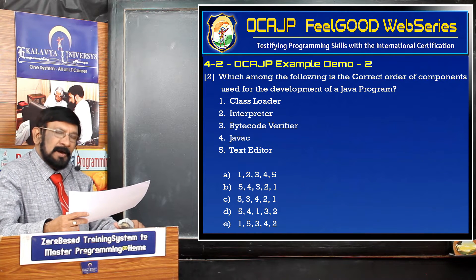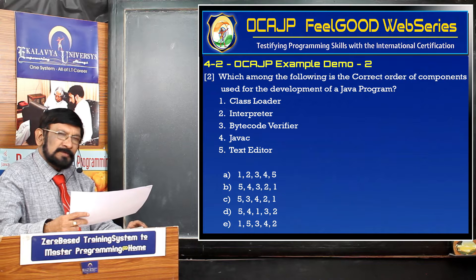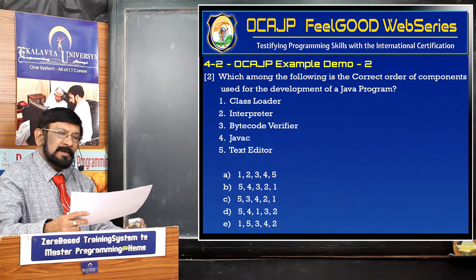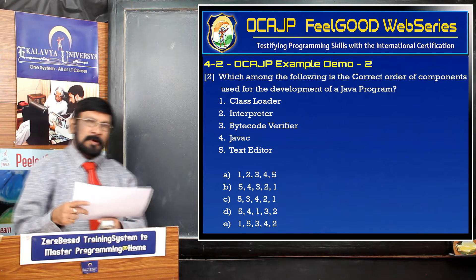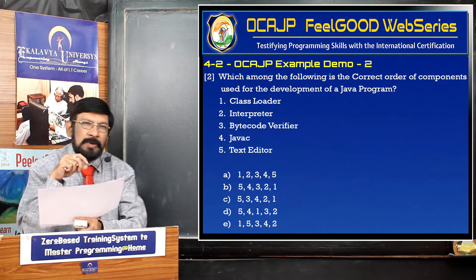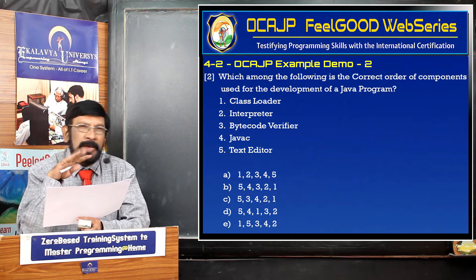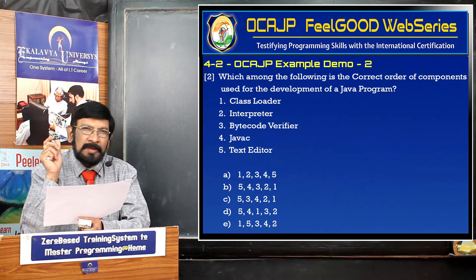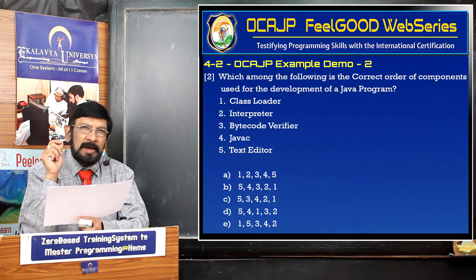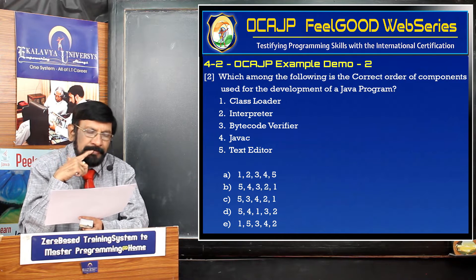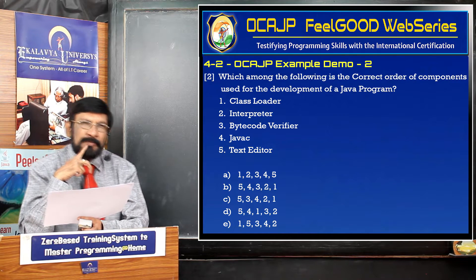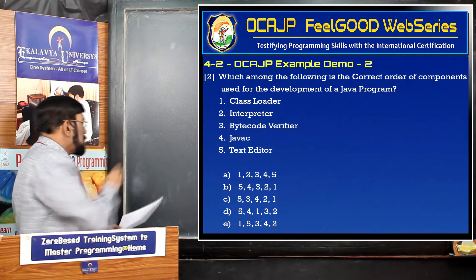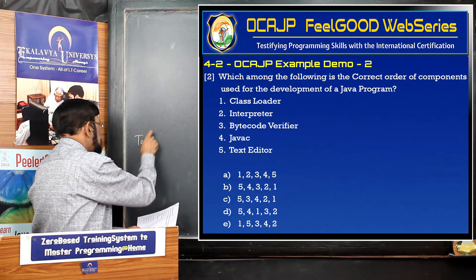Now we see which is the order - what is the process. First I explain, thereafter you can easily understand the order. Whenever you want to develop a program, first you type it, correct it, and all that on the IDE - integrated development environment. For that, what you require is a text editor. Without a text editor, you cannot do that.